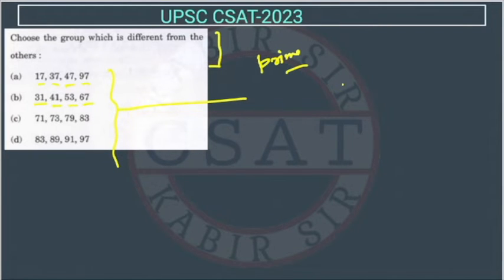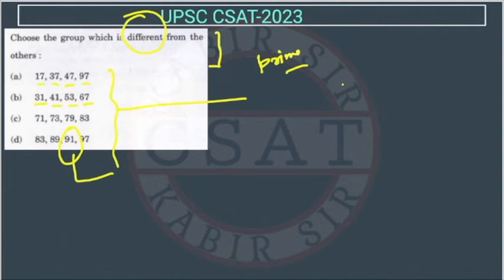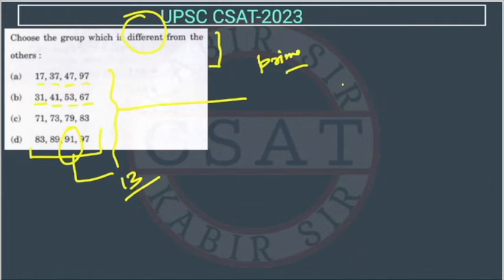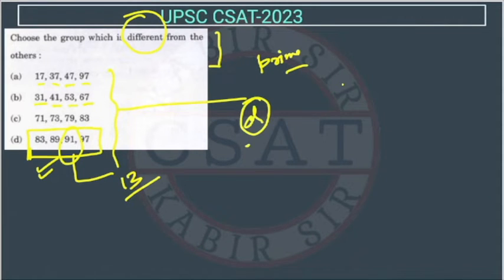So we have to tell which group is different. See, 91 is not prime — it is divisible by 13. So that series is different. All other series are series of prime numbers, but this series is not. So the answer to this question will be option D.